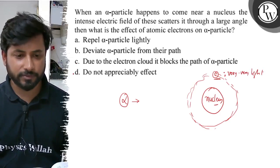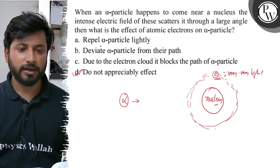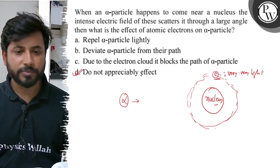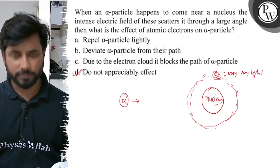Do not appreciably affect is the correct answer. They cannot repel, cannot deviate, and cannot block the alpha particle. So the final answer is: do not appreciably affect, option D.